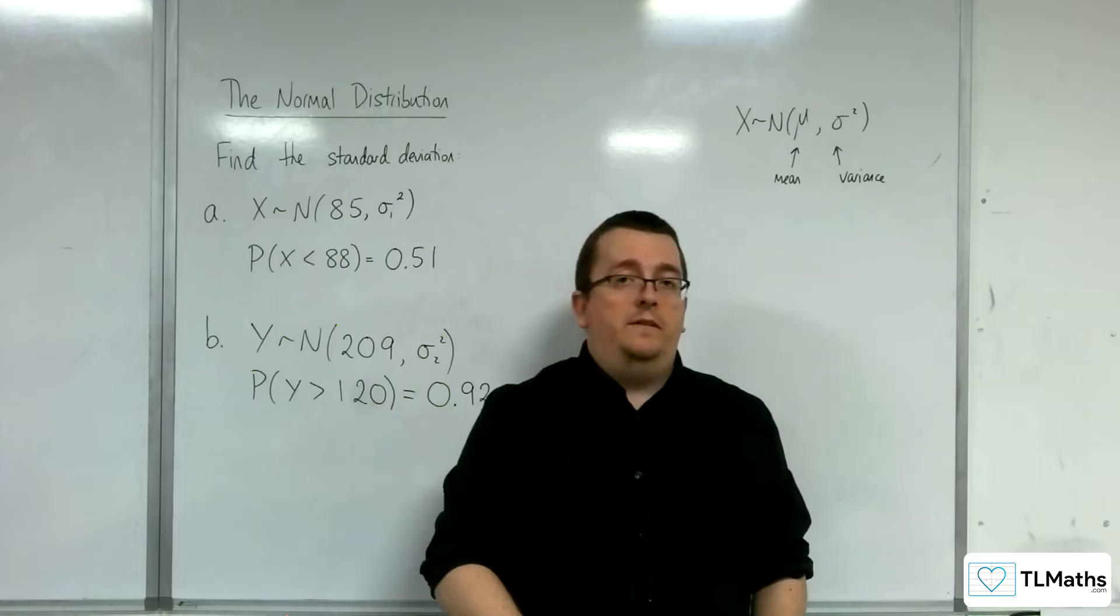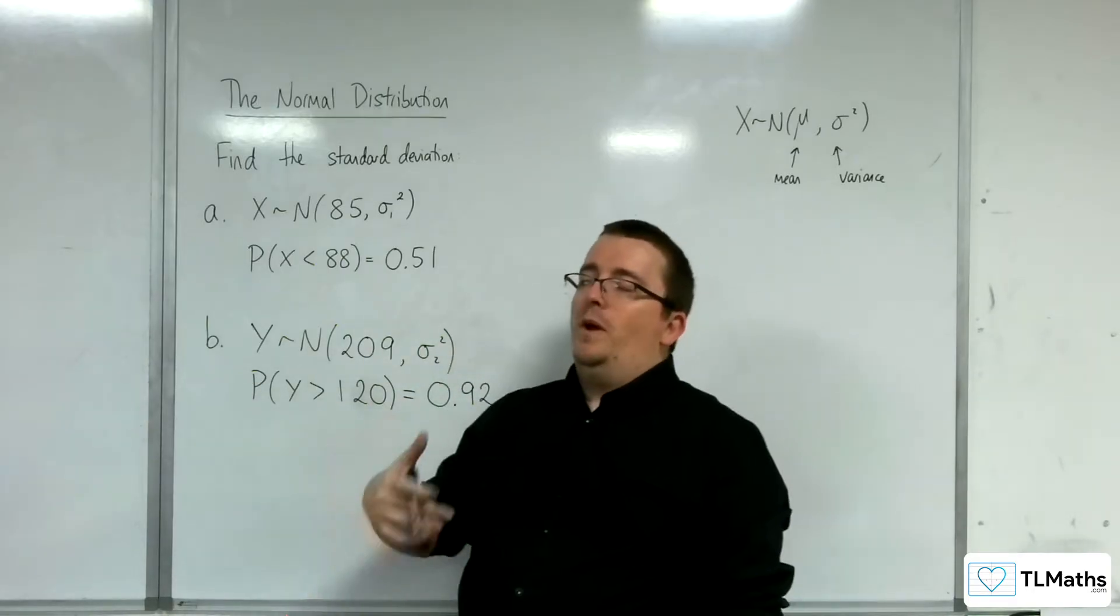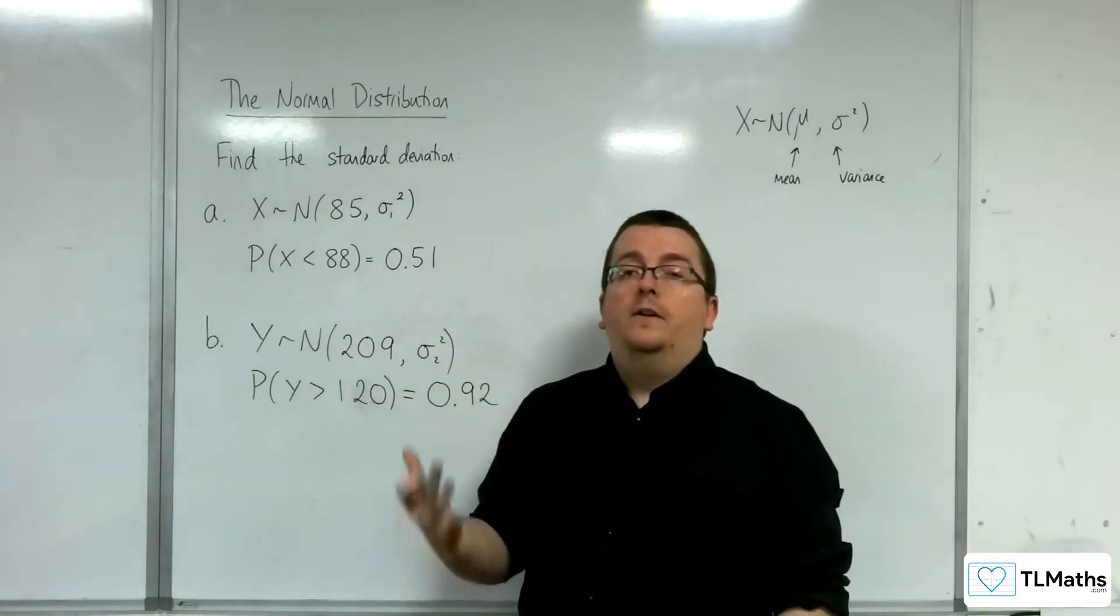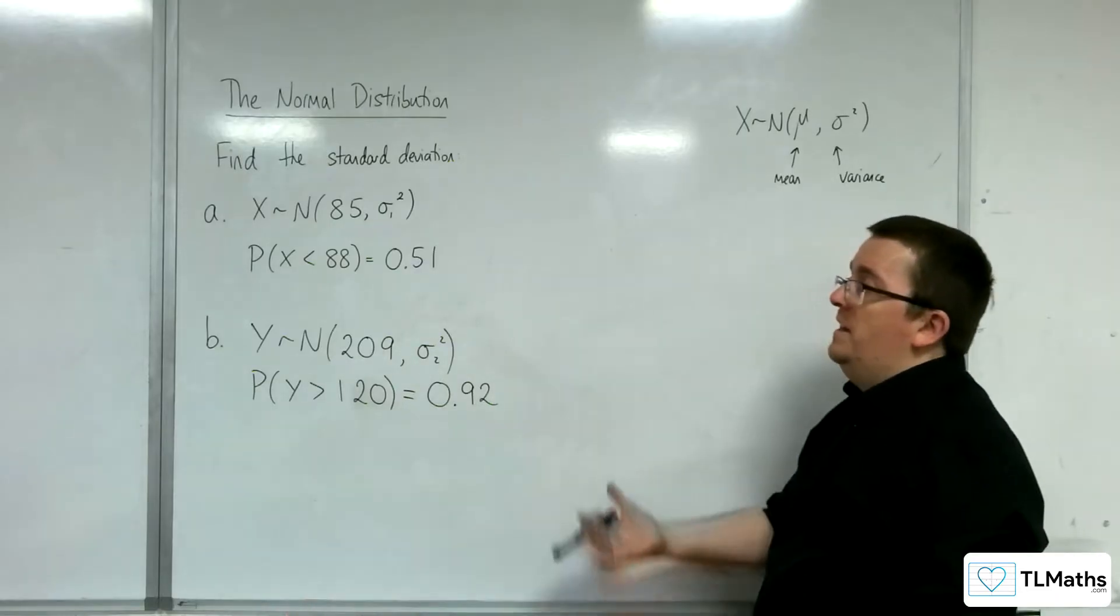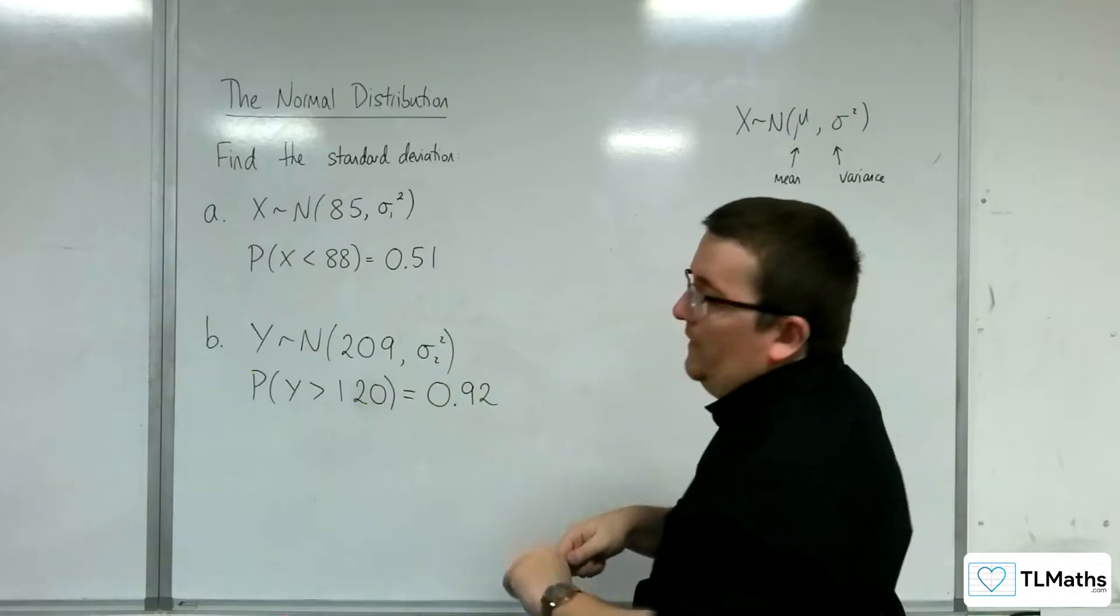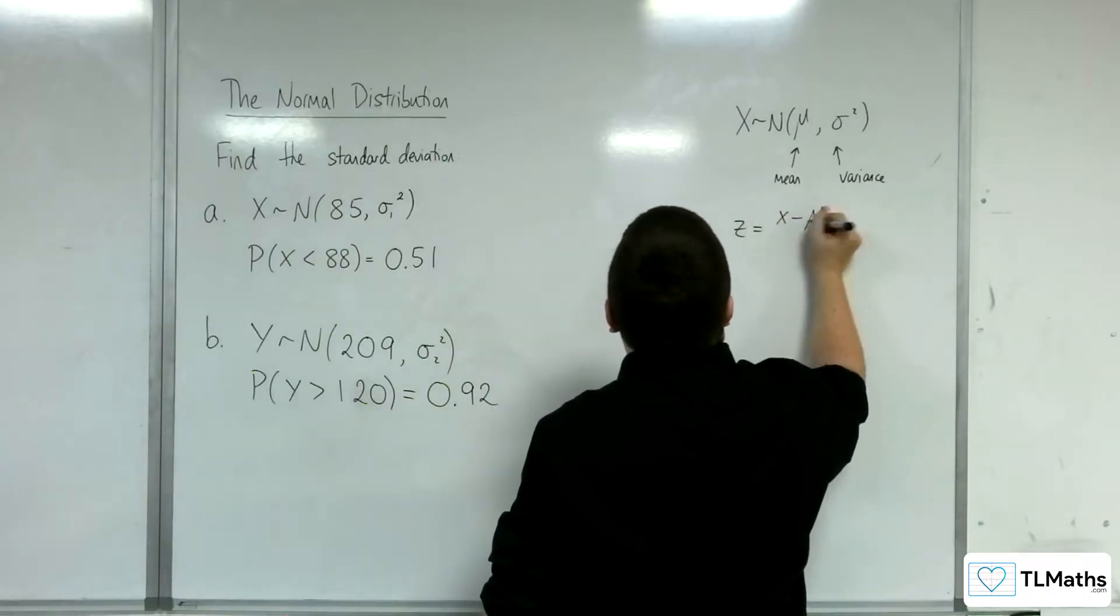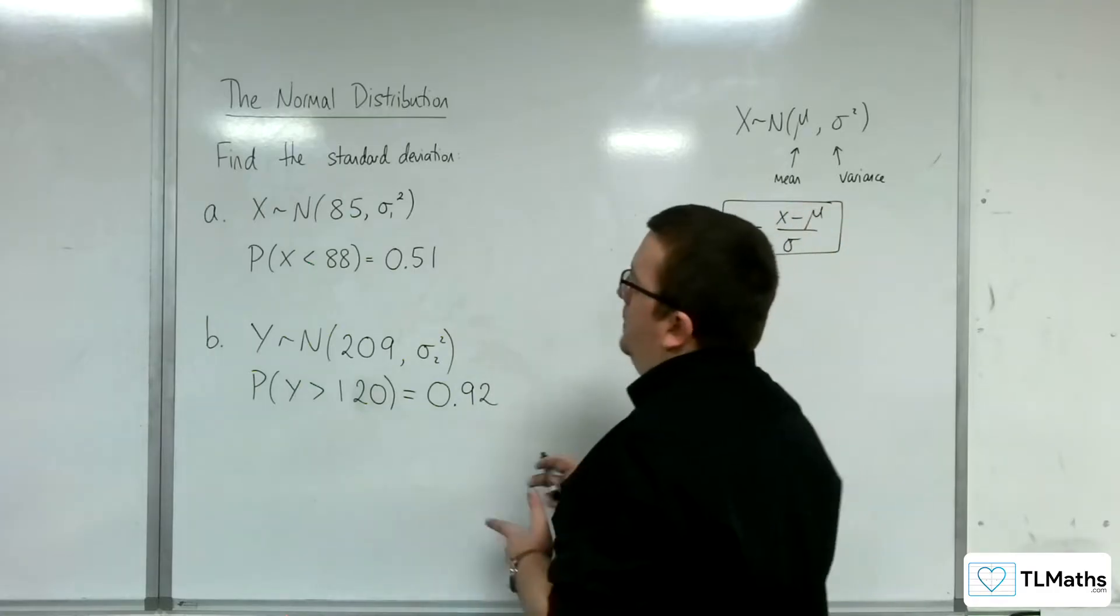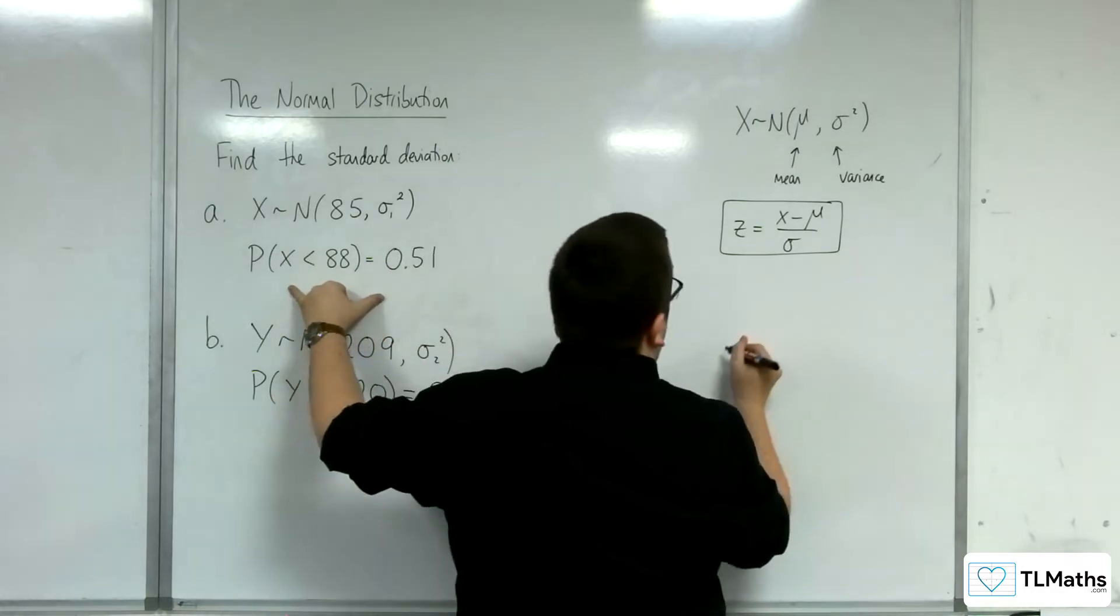Now, if you're given the mean but not the standard deviation, the situation algebraically is very similar to the previous set of problems where you didn't have the mean but you had the standard deviation instead. We're going to need to use the z equals x minus mu over sigma formula. Let's draw a diagram of what we've got for part A.